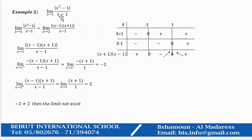Example two: the limit as x approaches one of absolute value of x squared minus one over x minus one. To simplify, we need to find the sign of x squared minus one, so we set up a table of signs.